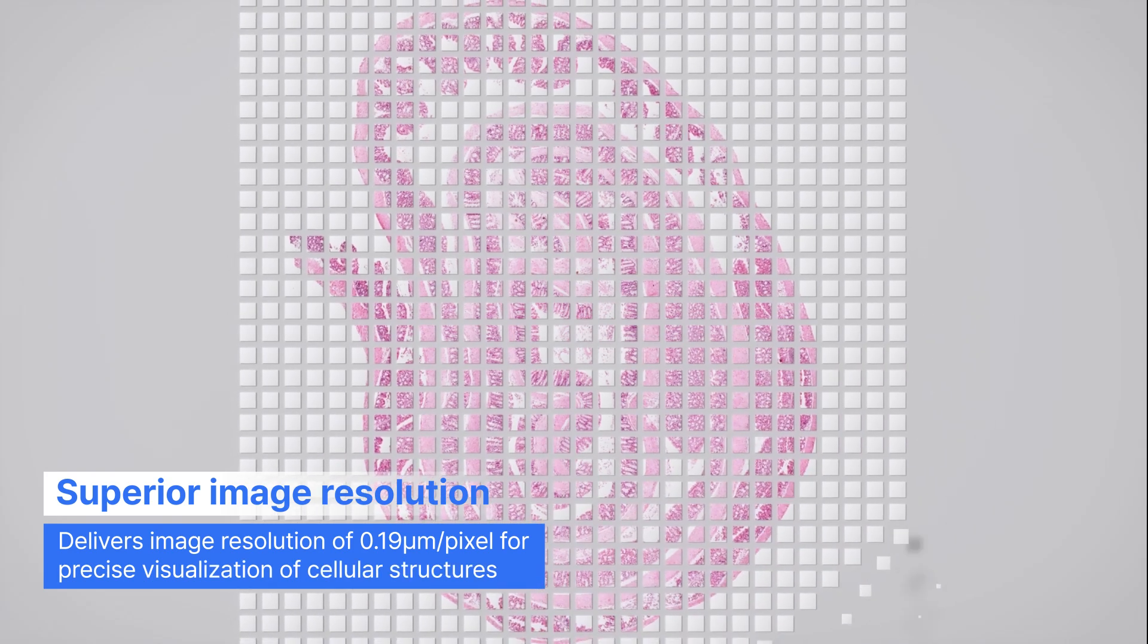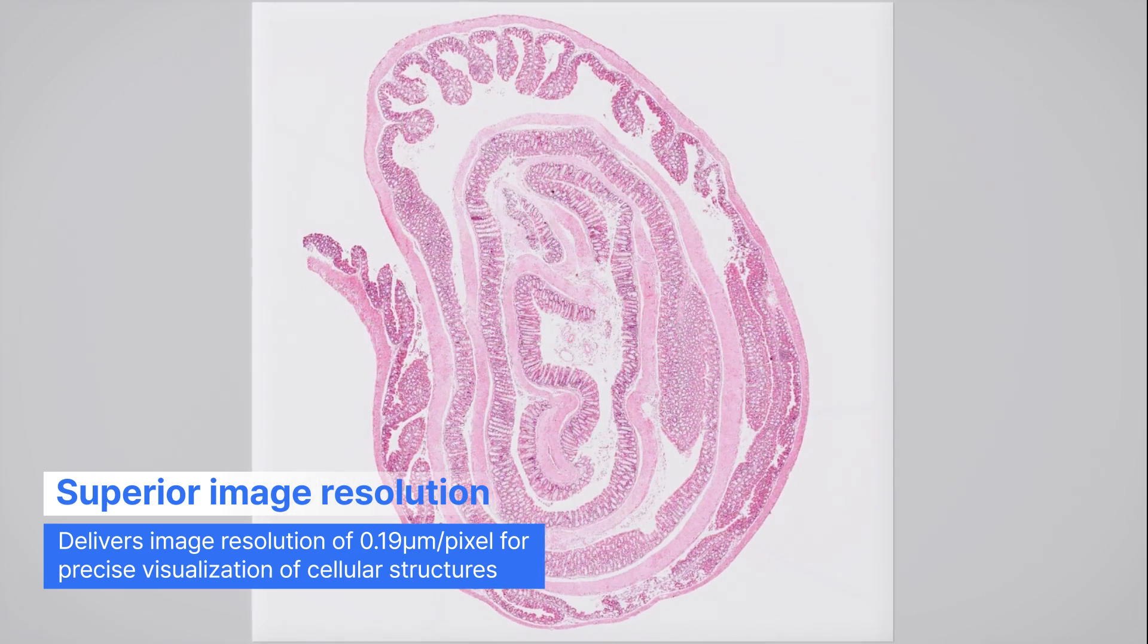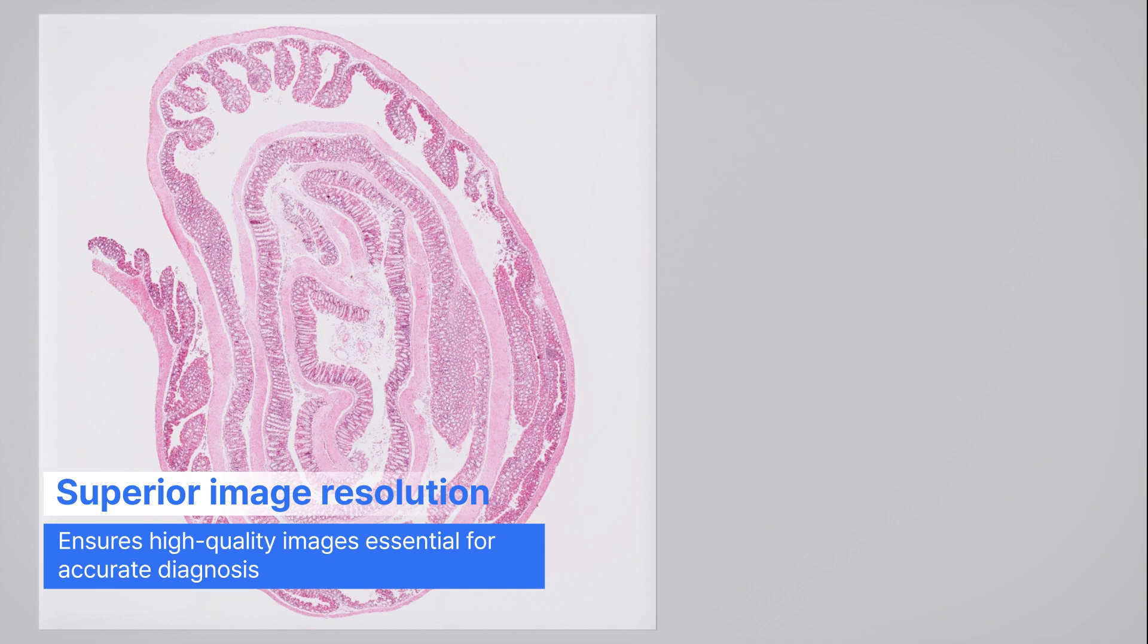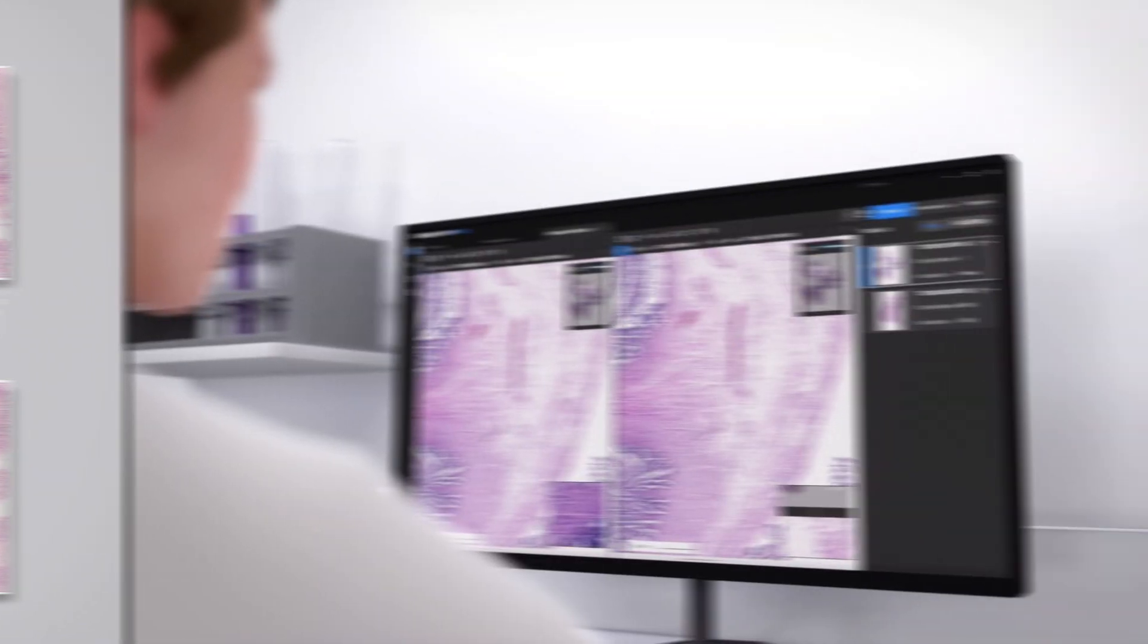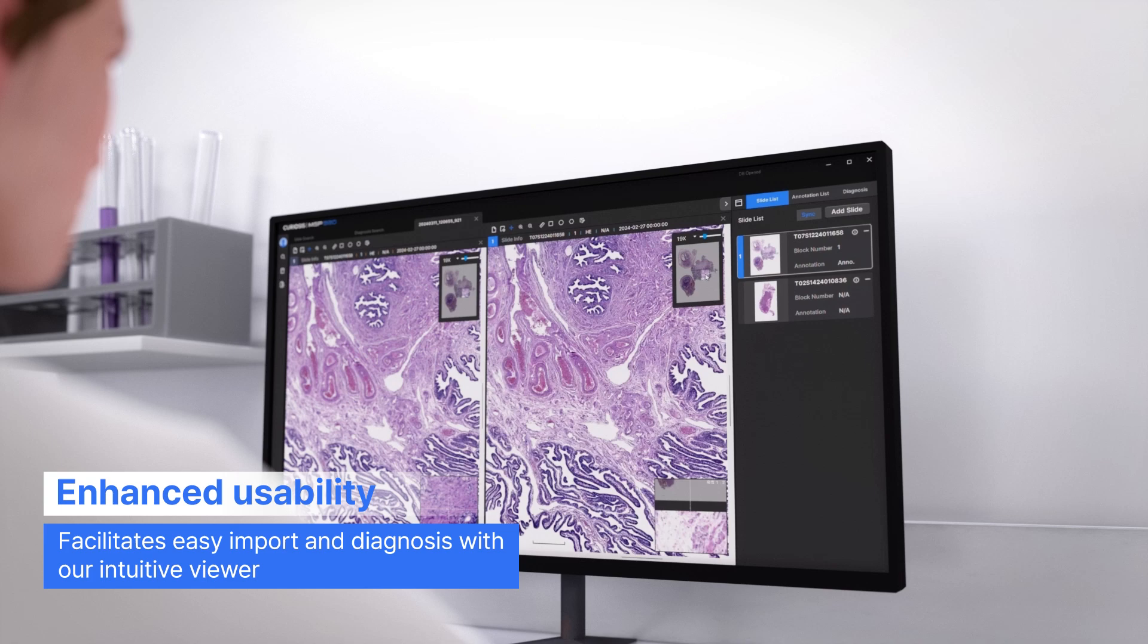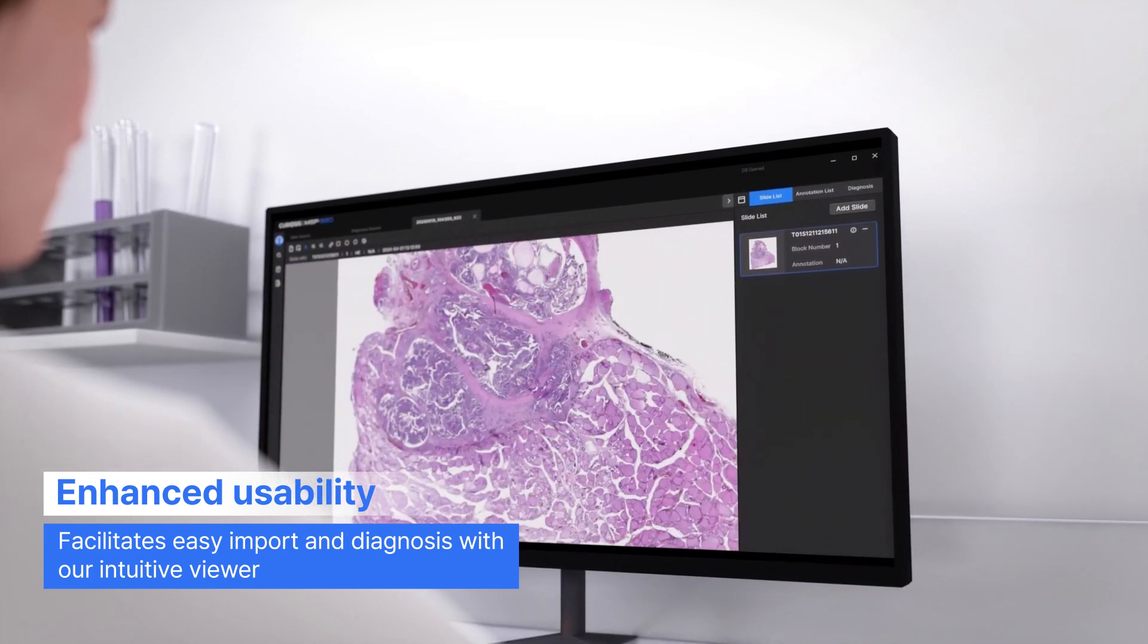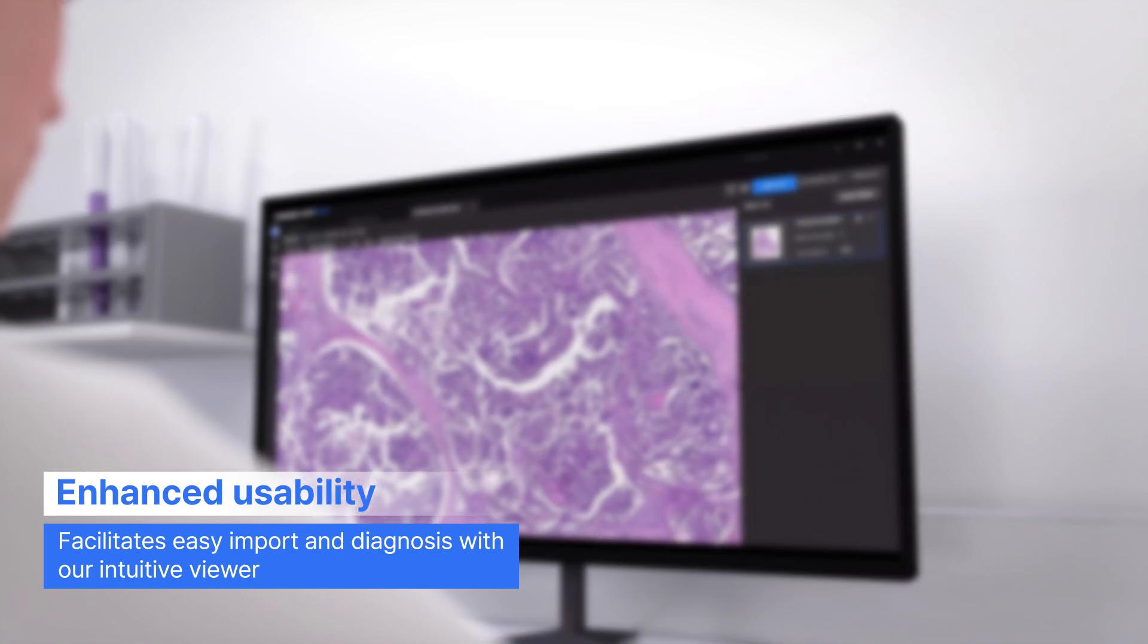By capturing each image at 0.19 micrometer per pixel resolution and with real-time stitching technology, it delivers a high-resolution view of entire tissues, enabling precise visualization of cellular structures. The MSP320 features an intuitive viewer that simplifies the archival of vital data.